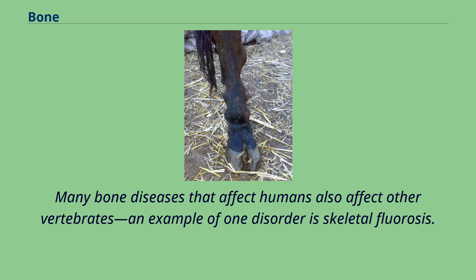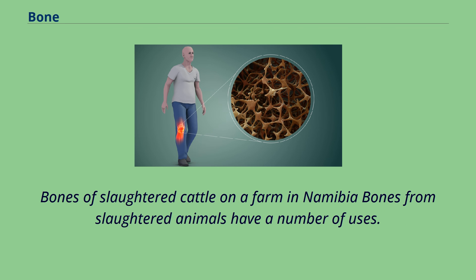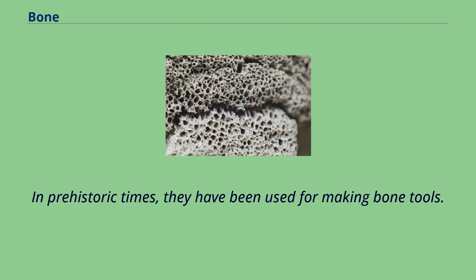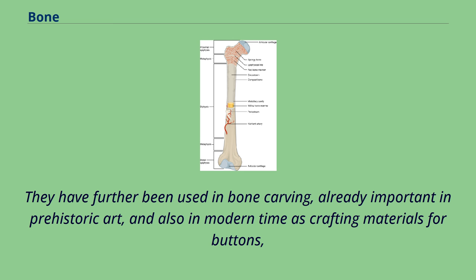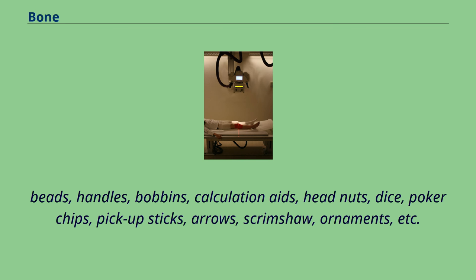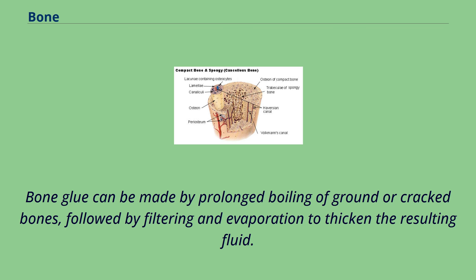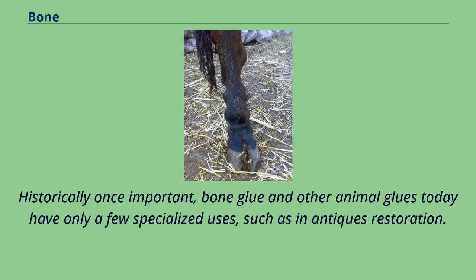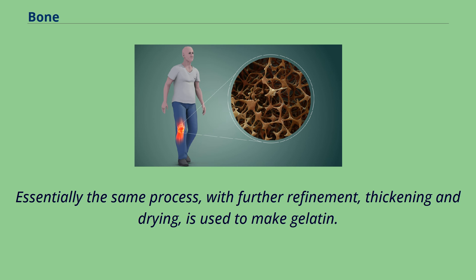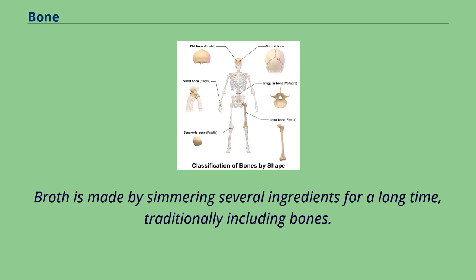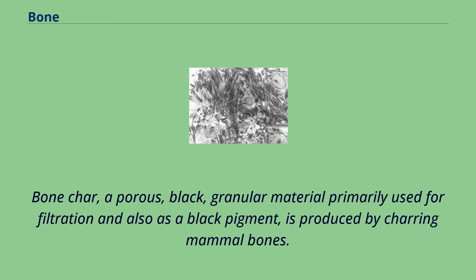Bones from slaughtered animals have a number of uses. In prehistoric times, they have been used for making bone tools. They have further been used in bone carving, important in prehistoric art and also in modern times as crafting materials for buttons, beads, handles, bobbins, calculation aids, dice, poker chips, pickup sticks, arrows, scrimshaw, and ornaments. Bone glue can be made by prolonged boiling of ground or cracked bones, followed by filtering and evaporation. Essentially the same process, with further refinement, thickening and drying, is used to make gelatin. Broth is made by simmering several ingredients for a long time, traditionally including bones. Bone char, a porous black granular material primarily used for filtration and also as a black pigment, is produced by charring mammal bones.